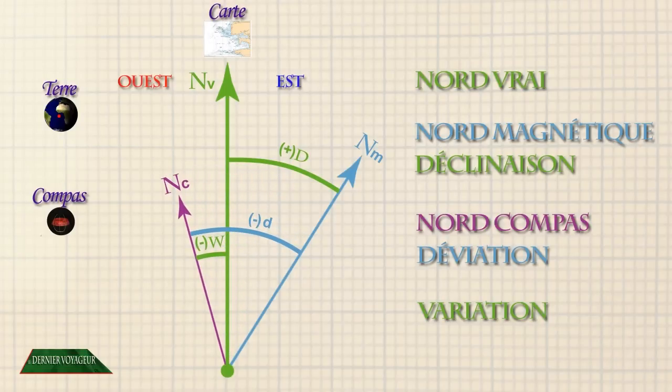Nord magnétique à l'est du nord-vrai, déclinaison positive, déviation négative, variation négative.